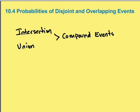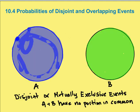So we call intersections and unions compound events. Now, what happens if you have two events that don't overlap? Well, we call those events disjoint or mutually exclusive events. That means that A and B have no portion in common.